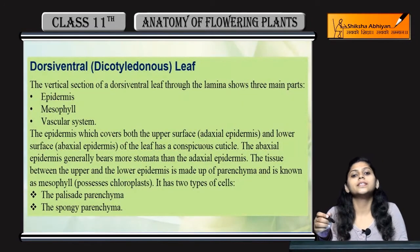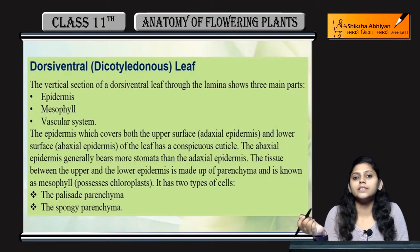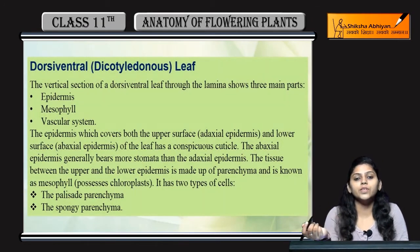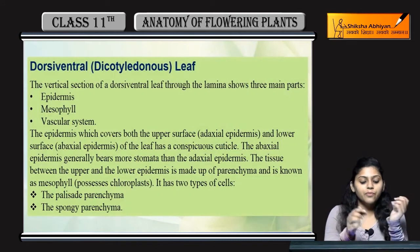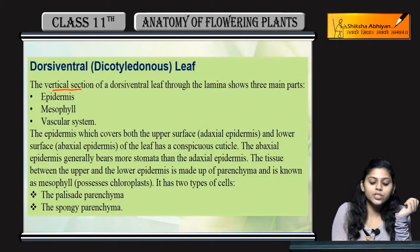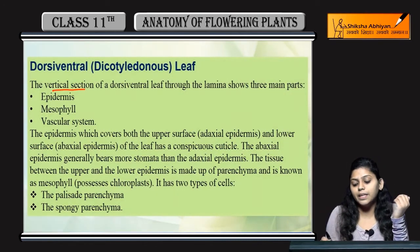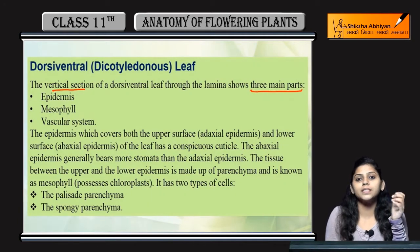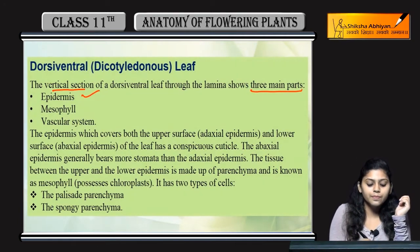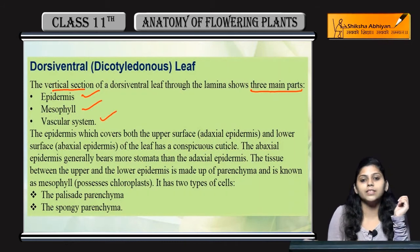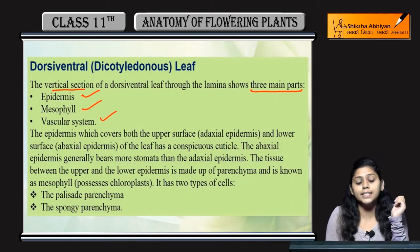Now coming to the dicot leaves or dorsiventral leaves. When we take the vertical section of dorsiventral leaves, then we will get three main parts: lamina, epidermal layer, mesophyll layer, and vascular system.